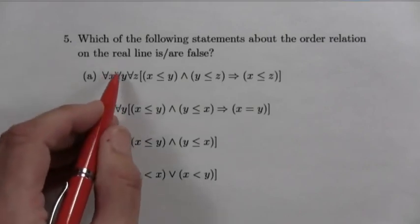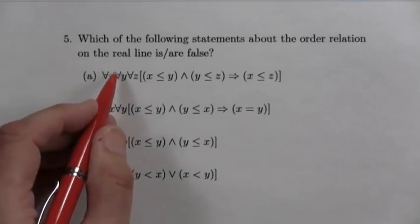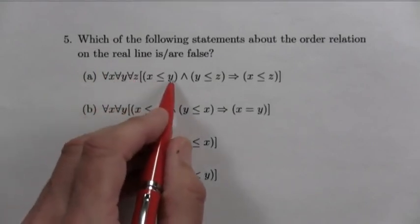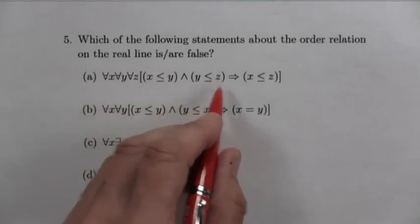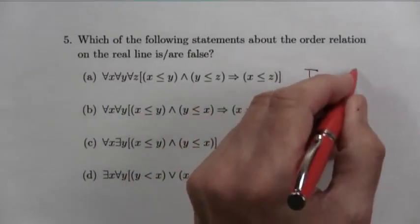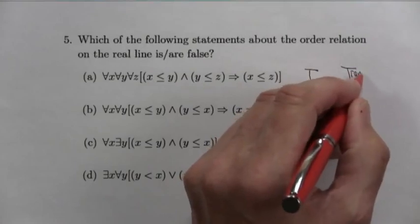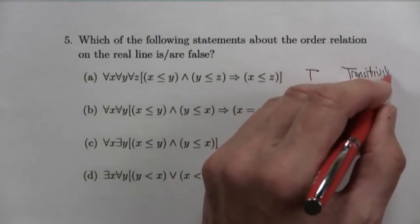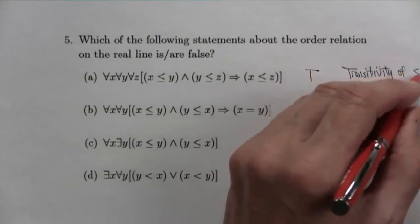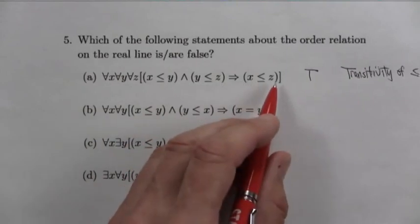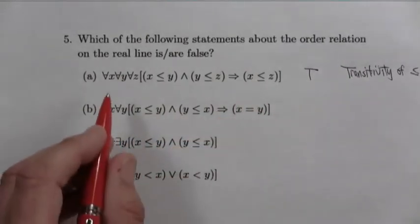Well, for question five, we have to find which statements are false. Okay? So let's just see what they say. For all x, for all y, for all z, if x is less than or equal to y and y is less than or equal to z, then x is less than or equal to z. That's true. It's actually known as the transitivity of the order relationship. Okay? If x is to the left of y and y is to the left of z, then x is to the left of z. Okay? So that one's true.